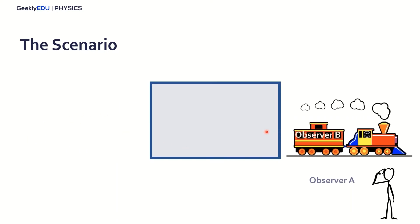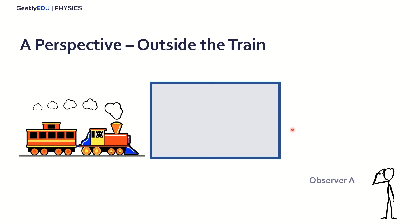So here we're going to take a look at what both observers are actually seeing, B and A. Let's go through the paradox. First, let's take a look into observer A's perspective, that's outside the train. So for observer A, he's actually seeing the train at a very high speed, close to the speed of light passing through this tunnel.